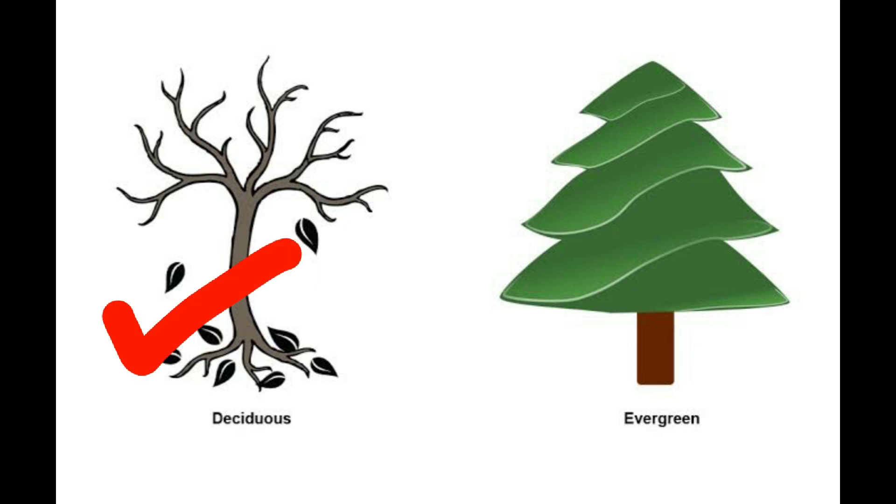Deciduous trees are those trees who lose all of their leaves for a particular season or a particular part of the year, usually during autumn. While evergreen trees don't lose all of their leaves at the same time, they always have some foliage. They do lose their leaves but little at a time.